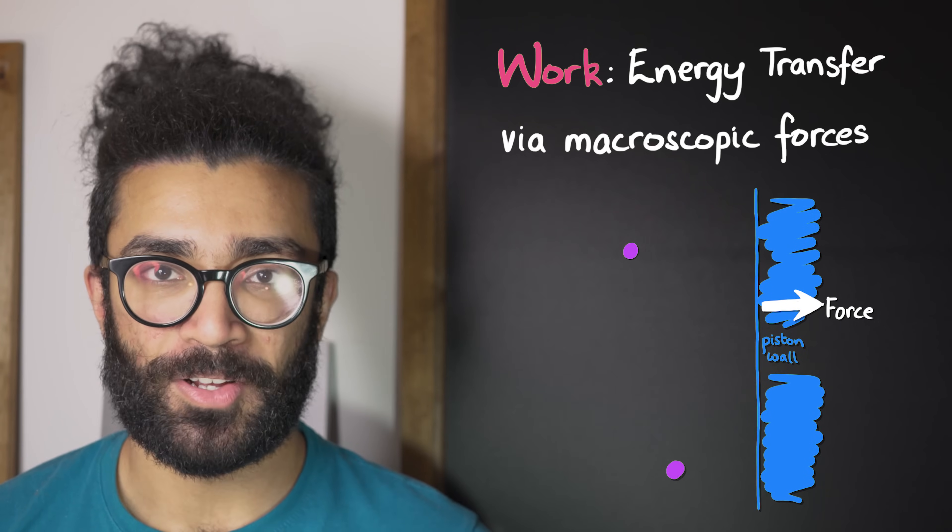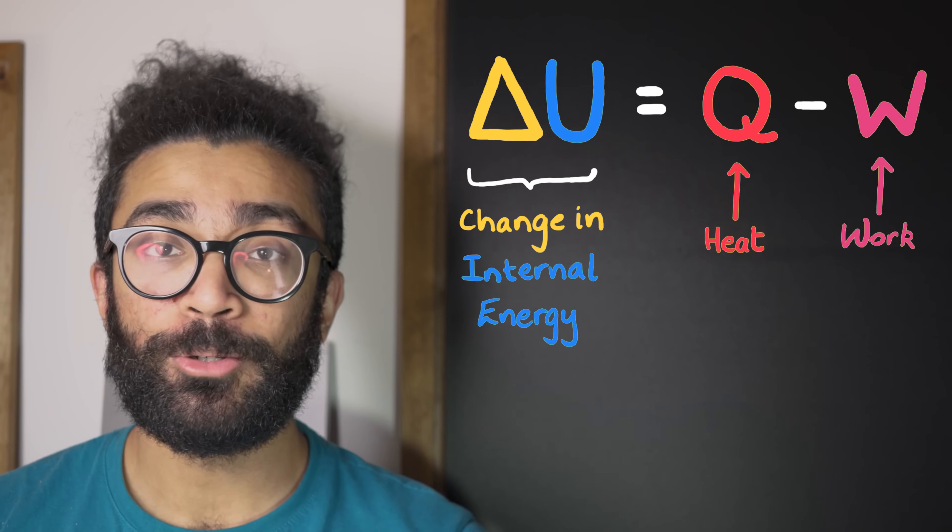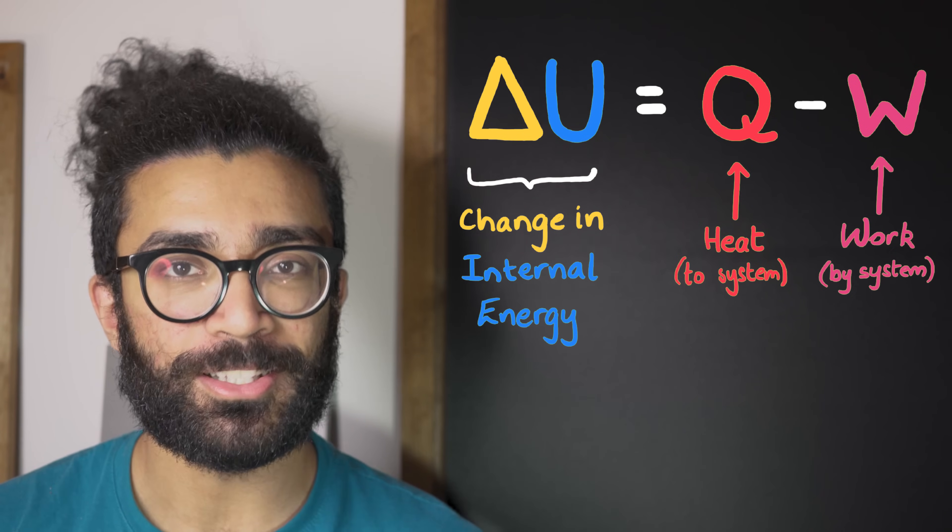And this kind of energy transfer is exactly what the second term in our main equation is referring to. W is defined as the work done by our system, in this case by our gas, onto its surroundings.